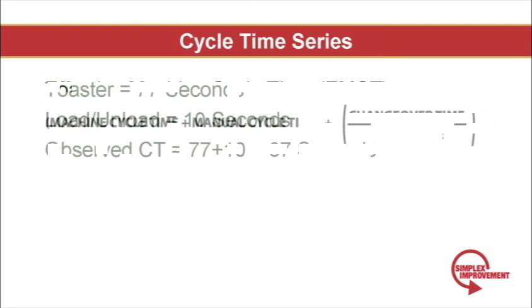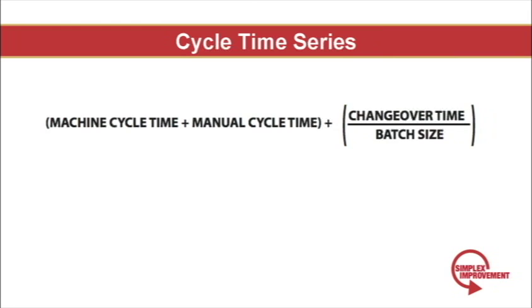With virtually all machinery, there is some sort of changeover time and parts also run in a batch. Manual loading and unloading of parts also takes place. All of these are baked into the formula for effective machine cycle time. Effective machine cycle time gives you another and arguably better view of cycle times in your facility rather than simple machine cycle time.